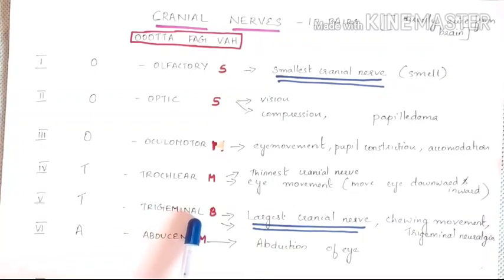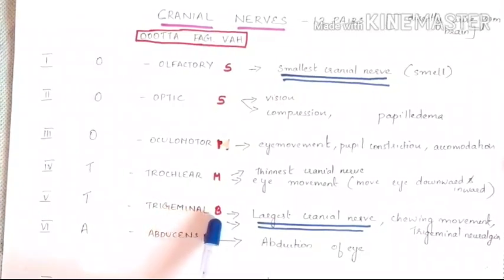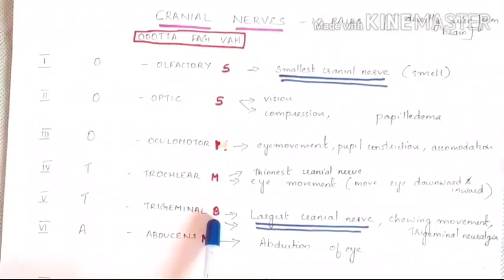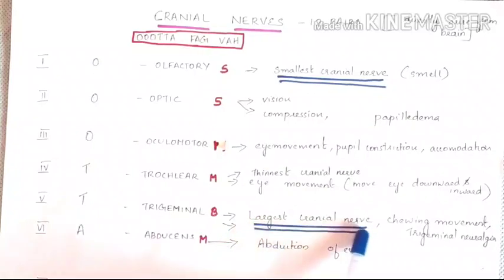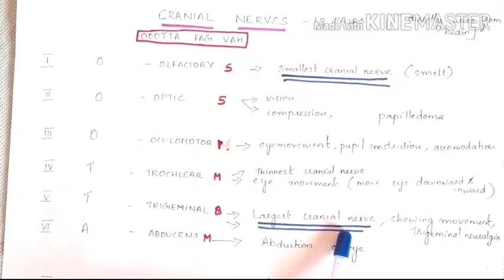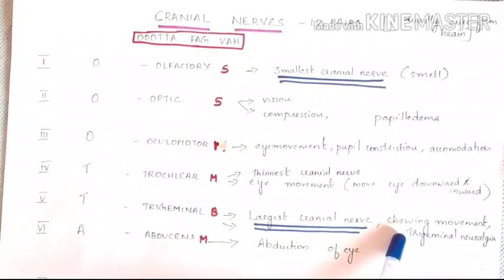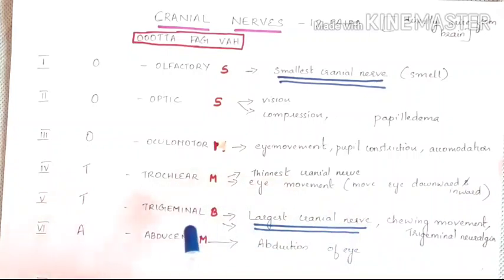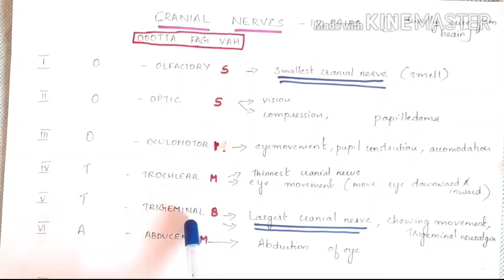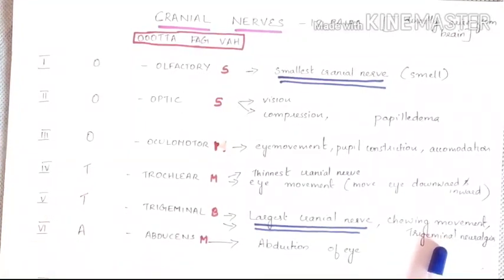The fifth cranial nerve is the trigeminal nerve. It is a mixed nerve with both sensory and motor functions. The trigeminal nerve is the largest and most complex cranial nerve. It controls the muscles of mastication, helping in chewing and biting. The condition associated with it is trigeminal neuralgia, a chronic pain condition affecting the trigeminal nerve in the face.